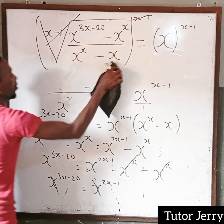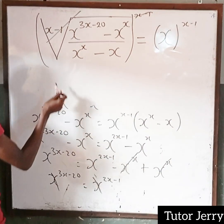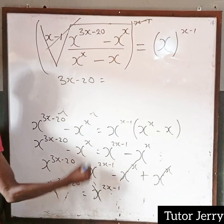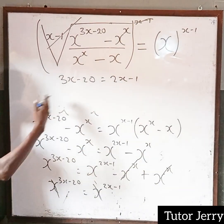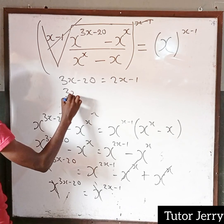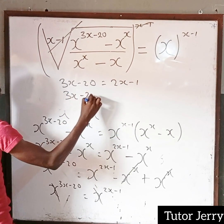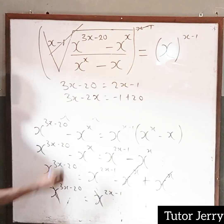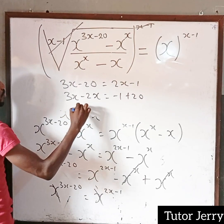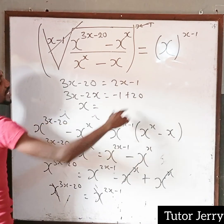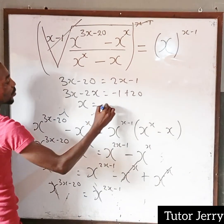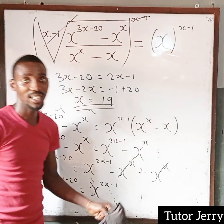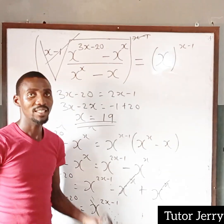We can therefore say that 3x minus 20 is equal to 2x minus 1. Collecting like terms: 3x minus 2x is equal to minus 1 plus 20. That gives us x equals 19. So the answer to this question is 19. Thank you.